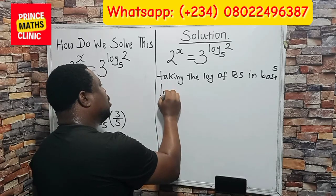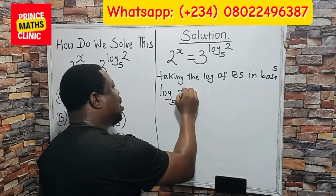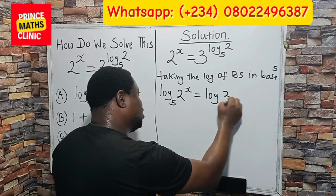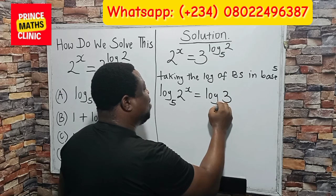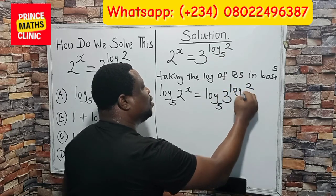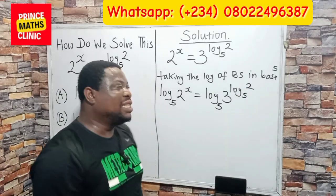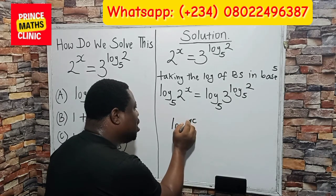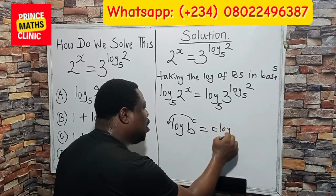So this becomes: log of 2 to the power of x equals log of 3, with the base being 5, and the power being log of 2 in base 5. Now, we are going to apply the rule that says that when we have a log of b to the power of c, the power multiplies the log — so this becomes c log of b.